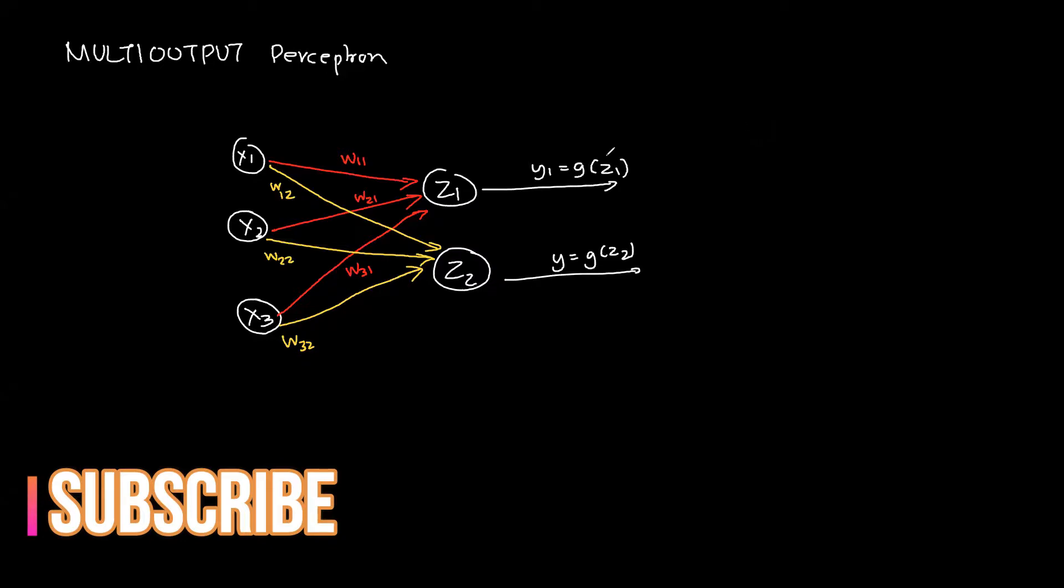Okay guys, so now we have more than one perceptron in the same network. Let's see how exactly this particular thing will work. One thing which should be apparent is that we will have two y values.